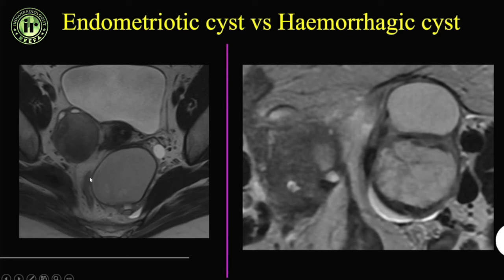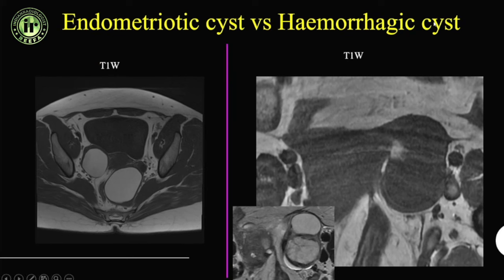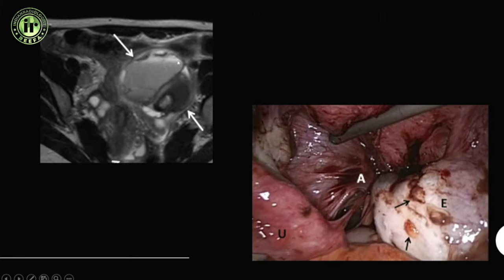Comparing endometriotic cysts versus hemorrhagic cysts: endometriotic cysts have smooth shading and are T1 bright. Hemorrhagic cysts show a mesh-like appearance without shading. If there is doubt, follow-up is useful — hemorrhagic cysts should resolve while endometriotic cysts will not. Also, hemorrhagic cysts may sometimes be T1 hypointense as methemoglobin gradually decreases, whereas endometriotic cysts will always be T1 bright.